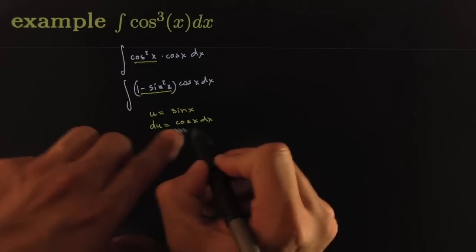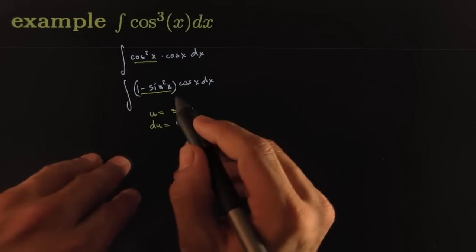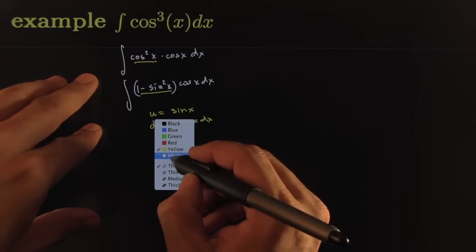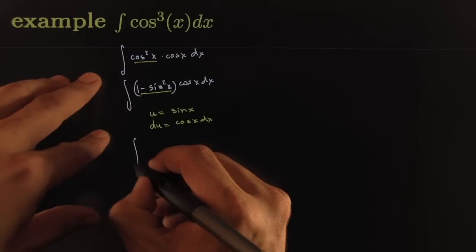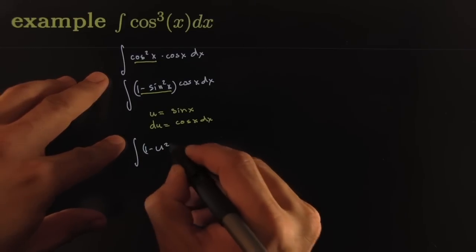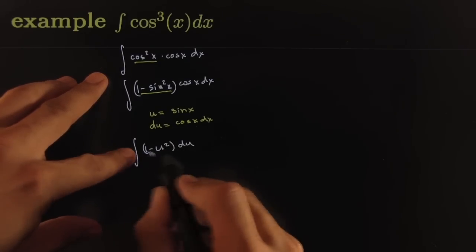And so the integral would look something like this: it would look like the integral of (1 - u²) du, which of course is just a polynomial where we could just use the power rule.